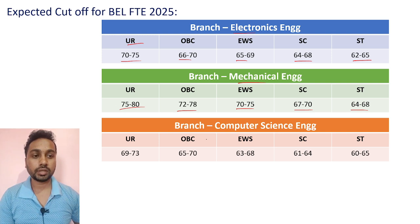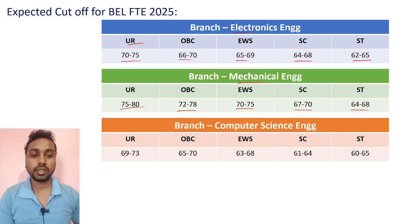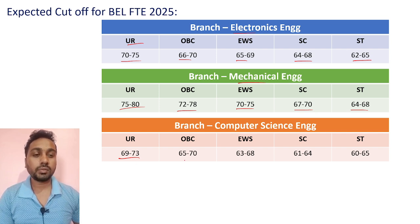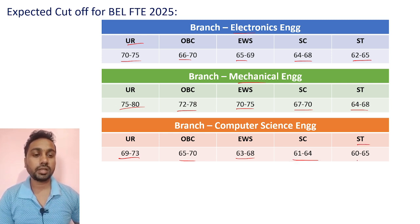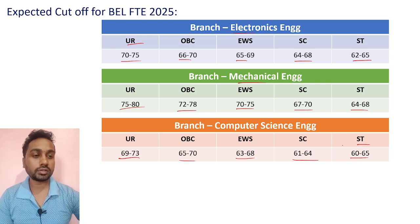For Computer Science engineers, the expected cutoff is: Unreserved category 69–73, OBC 65–70, EWS 63–68, SC 61–64, and ST 60–63.